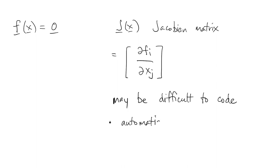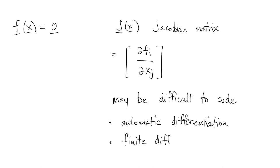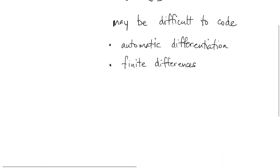There are a couple of different responses. One is called automatic differentiation, where we try to use software to do the thing automatically — that's a whole field onto itself. A simpler approach is to use what are called finite differences.